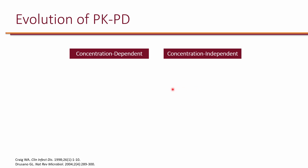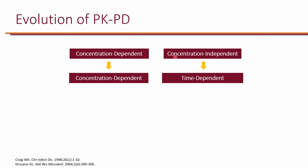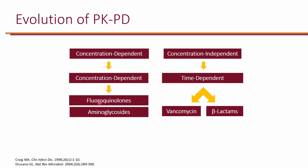Generally speaking, antibiotics can be divided into concentration-dependent and concentration-independent killing. Over time, clinicians started referring to concentration-independent as time-dependent. Examples of concentration-dependent antibiotics are fluoroquinolones and aminoglycosides. Time-dependent antibiotics include beta-lactams and vancomycin. The PKPD parameter for time-dependent antibiotics, specifically beta-lactams, is the time above MIC — it's how long the concentration stays above the MIC that results in maximum killing.